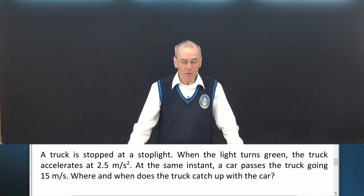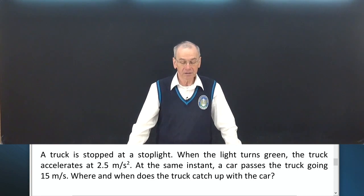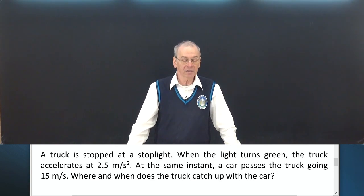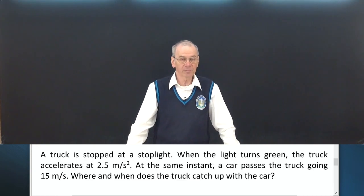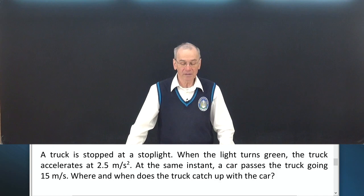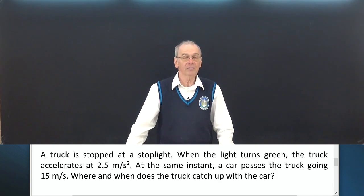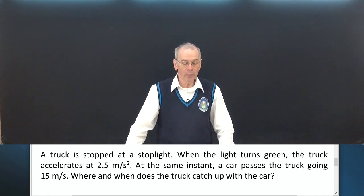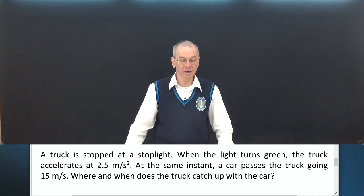A truck is stopped at a stoplight. When the light turns green, the truck accelerates at 2.5 meters per second squared. At the same instant, a car passes the truck going 15 meters per second. Where and when does the truck catch up with the car?